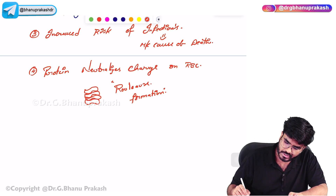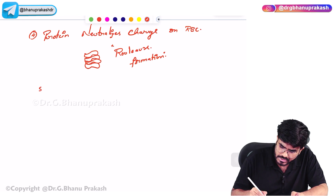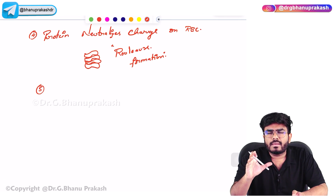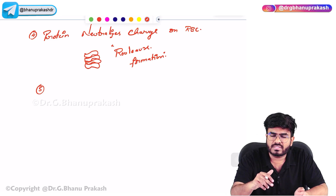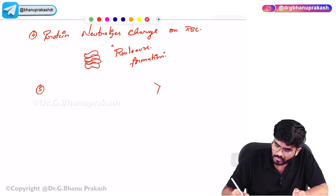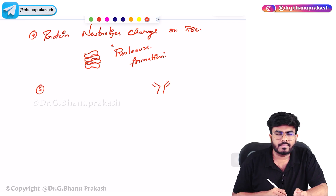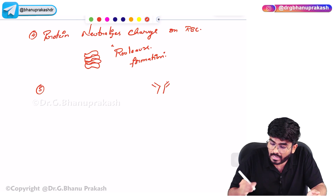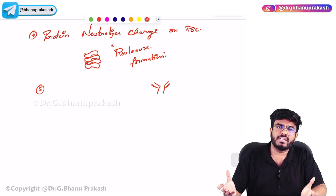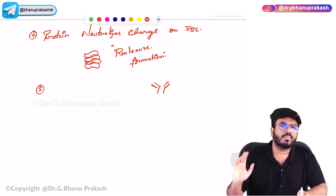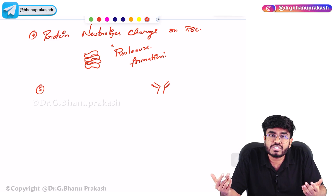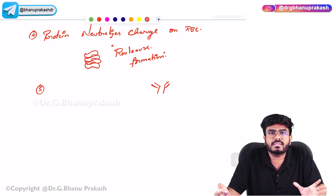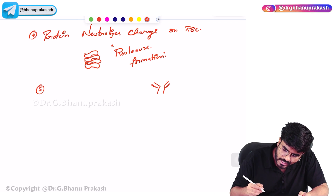In multiple myeloma, antibodies are being produced. Even physiologically, there is some extra production of light chains. In an antibody, there is a heavy chain that determines the antibody type, and a light chain. In multiple myeloma, there is too much production of light chains. These light chains leak into the kidneys and come out in the urine. In the urine, you can see these light chains, which are called Bence Jones proteins — so there is proteinuria.